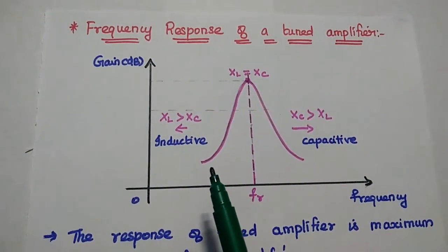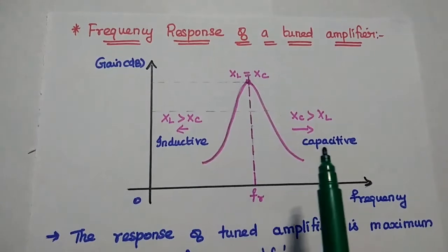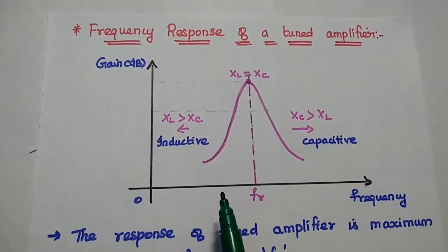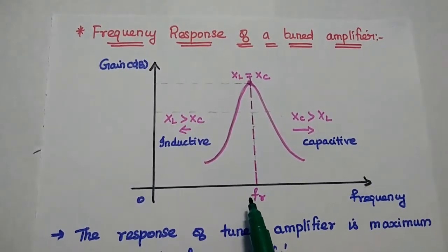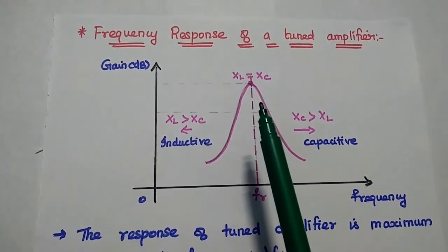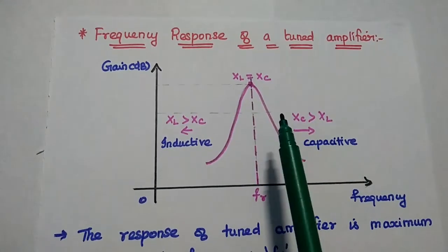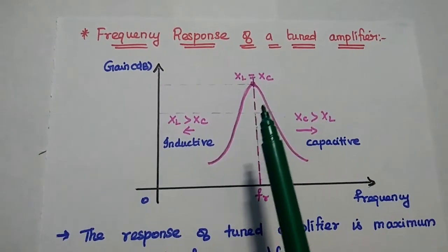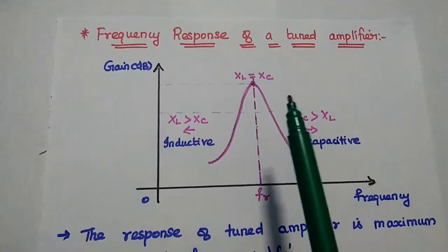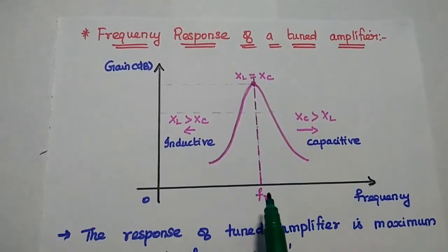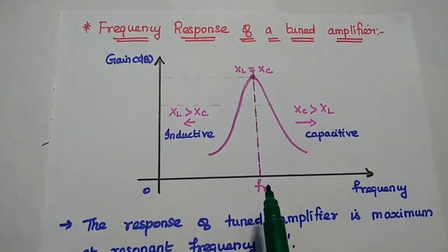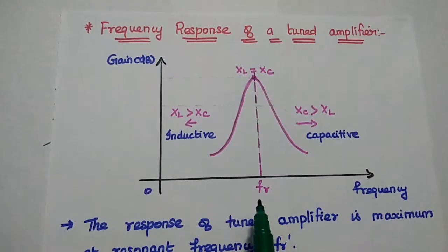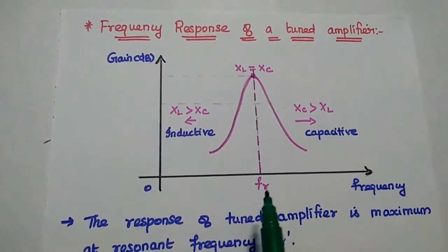Next one is frequency response of a tuned amplifier. This is the graph between gain and frequency. At resonant frequency, the inductive reactance is equal to the capacitive reactance that means both values can be cancelled each other. At this point, the tuned circuit is acting as a resistive load. It can produce maximum output.